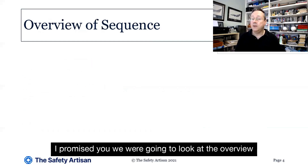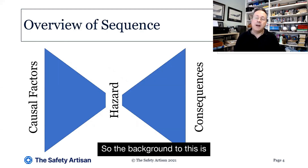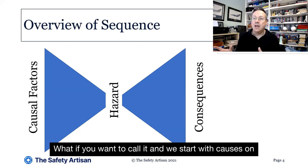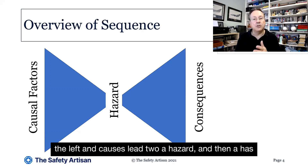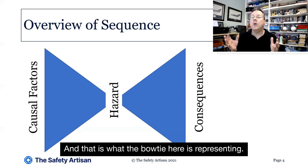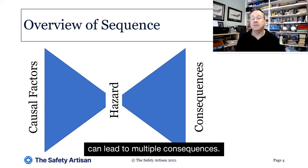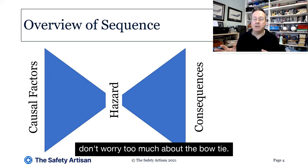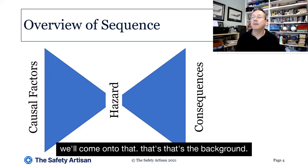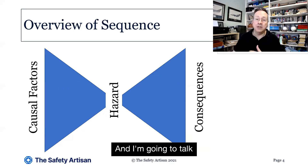I promised we were going to look at the overview of the sequence, and I think this is what pulls it all together and explains it so powerfully. The background to this is we've got an accident or mishap sequence. We start with causes on the left, and causes lead to a hazard, and then a hazard can lead to multiple consequences. That is what the bow tie here is representing — multiple causes can lead to a single hazard and a single hazard can lead to multiple consequences. It's a useful technique, but it's not the only one. This is the accident sequence we're trying to discover and understand.